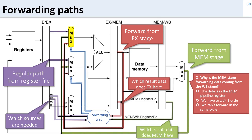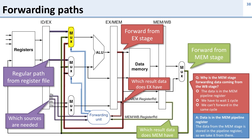Why is the MEM stage forwarding data coming from the writeback stage? The answer is that the data from the MEM stage is sitting in the pipeline register right before the writeback stage — it was written into that pipeline register at the end of the MEM stage. So if we want to forward that data, we need to take it out of that pipeline register.